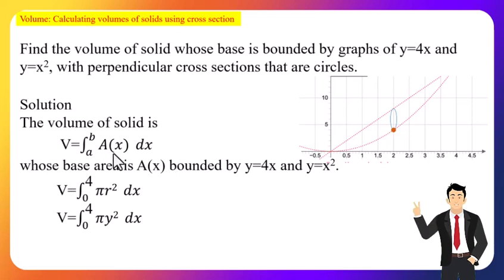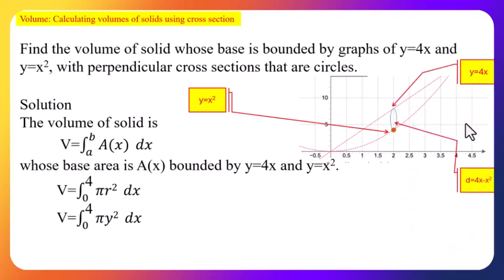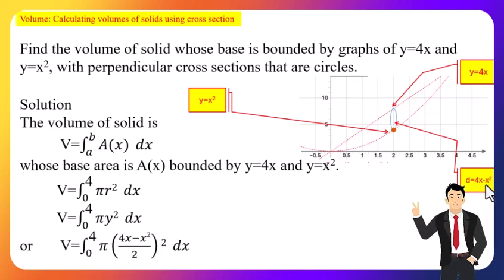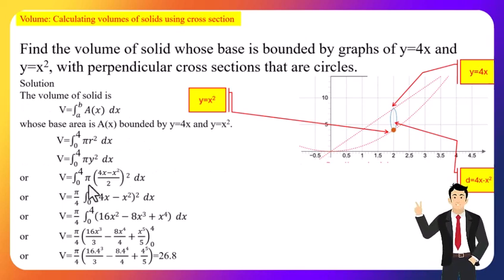Since the cross-section is a circle, A = πr². The radius is the distance between the two y-values: the lower point has y-value x² and the upper point has y-value 4x. Therefore the diameter is 4x − x², making the radius r = (4x − x²)/2. The volume is then π · ∫₀⁴ [(4x − x²)/2]² dx.